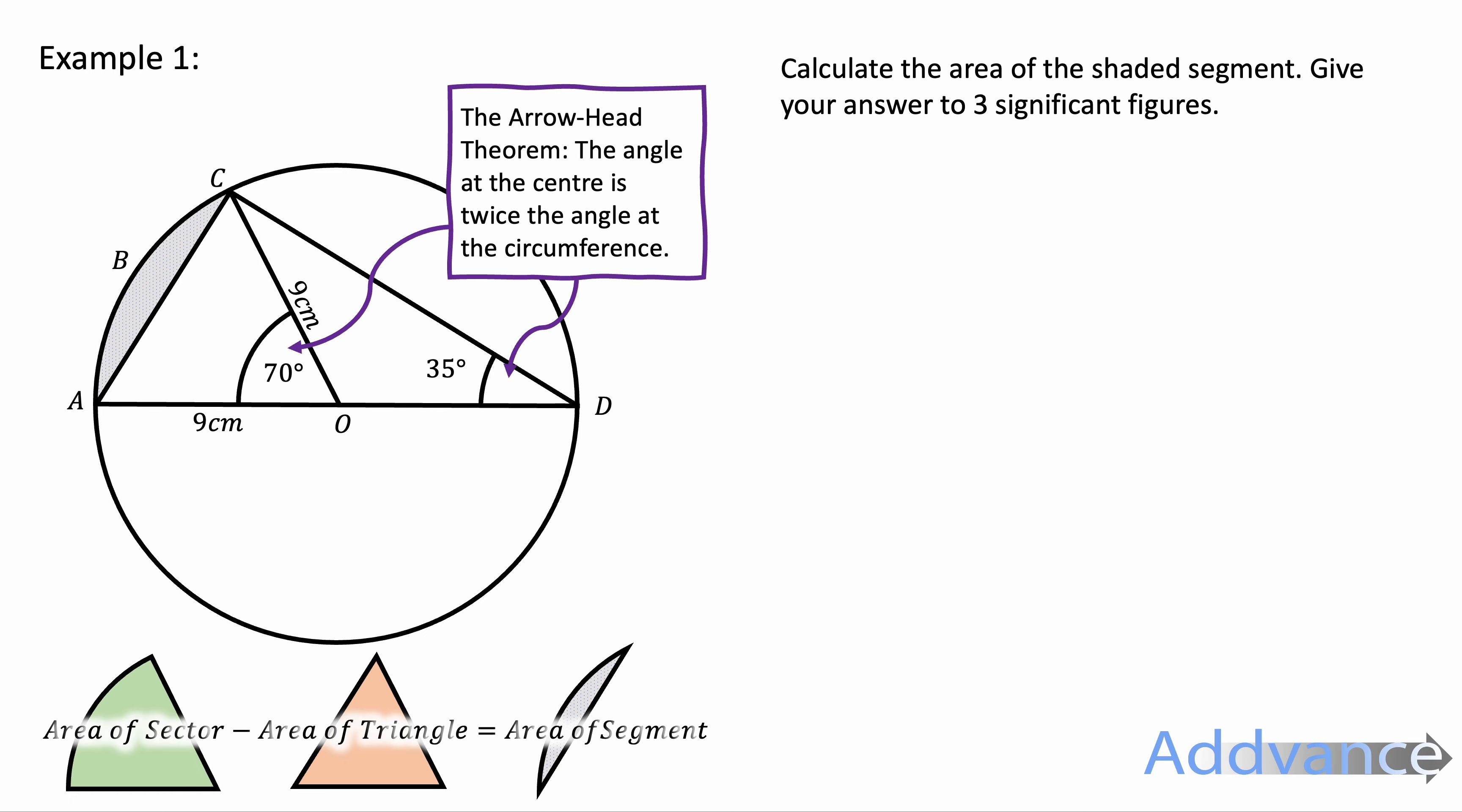Now, I can notice that this makes the arrowhead theorem. So because I know the outside angle is 35, the inside angle at the centre must be 70. The angle at the centre is twice the angle at the circumference.